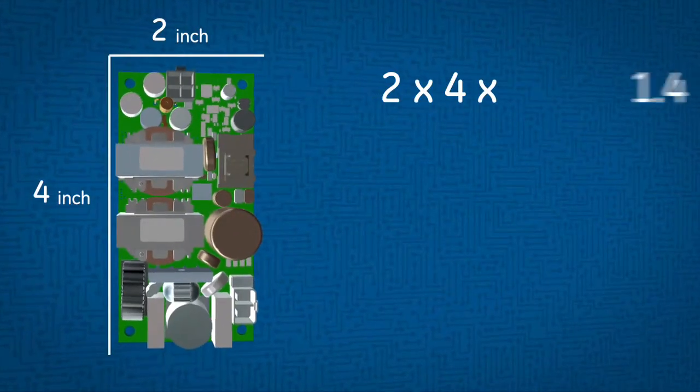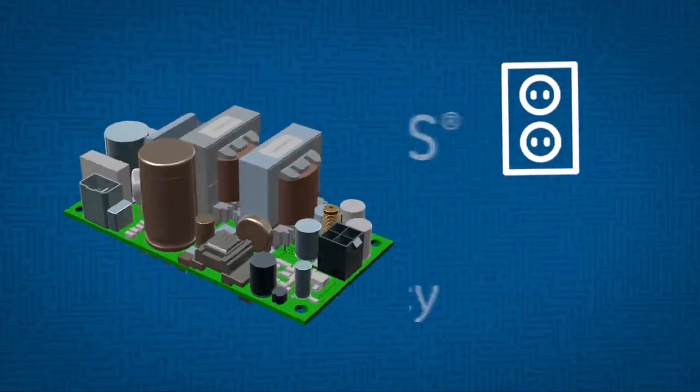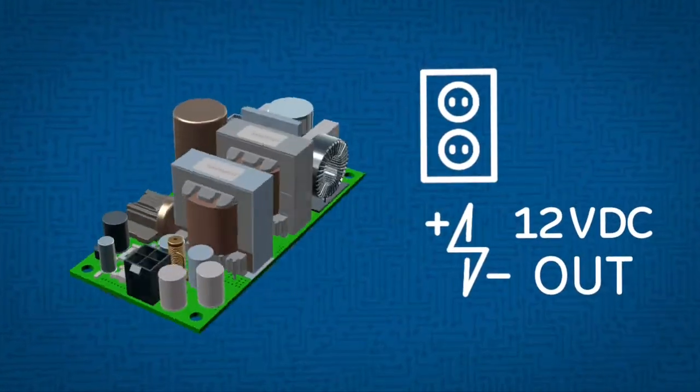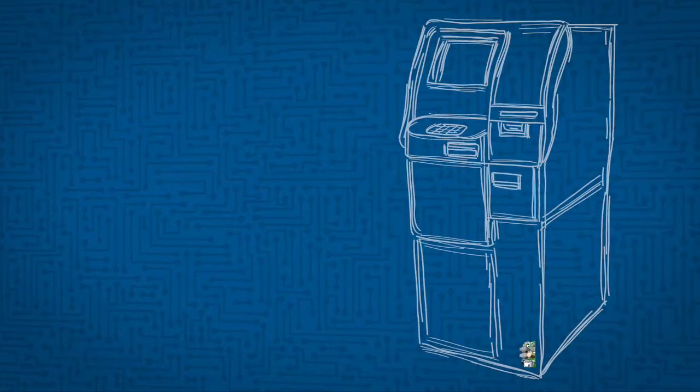With its 2x4x1.4 inch footprint and 80 plus gold energy efficiency, this universal AC input to 12 volt DC single output power supply is very compact and powerful. That means it's able to meet the challenges created by limited room and low airflow.